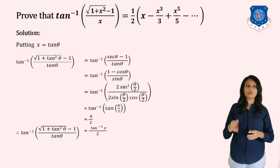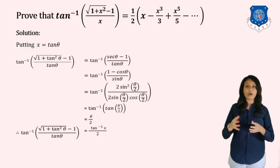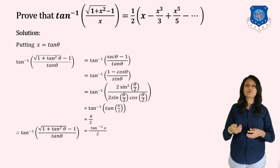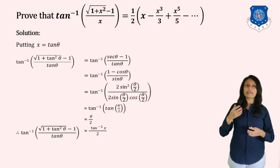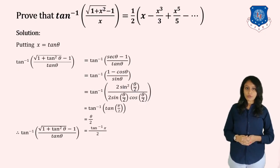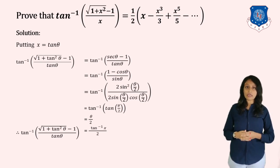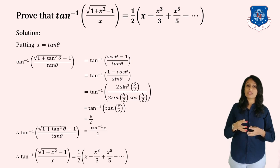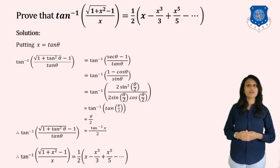Using the formulas 1−cos θ = 2sin²(θ/2) and sin θ = 2sin(θ/2)cos(θ/2), we get tan⁻¹[sin(θ/2)/cos(θ/2)] = tan⁻¹[tan(θ/2)] = θ/2. Since x = tan θ, we have θ = tan⁻¹x, so the expression equals (tan⁻¹x)/2. Substituting the series of tan⁻¹x = x − x³/3 + x⁵/5 + …, we get (1/2)(x − x³/3 + x⁵/5 − …), which is the required result.